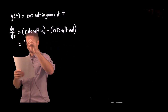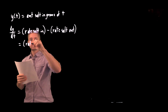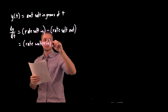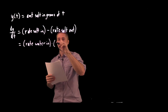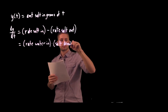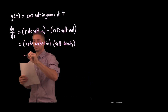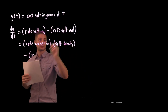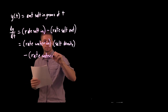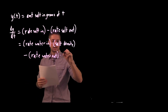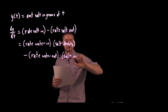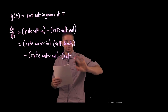The rate at which salt is going in is the rate at which water is going into the tank times the salt density in that water. Similarly, for the rate of salt leaving the tank, we have the rate of water leaving the tank times the salt density in that water. These salt densities will not be the same.